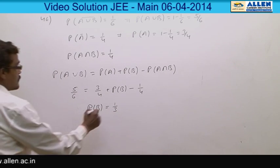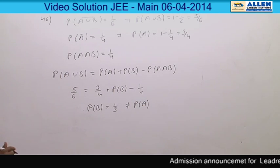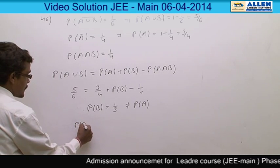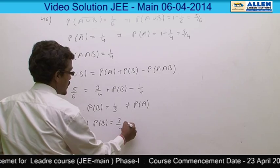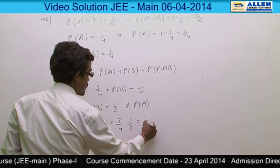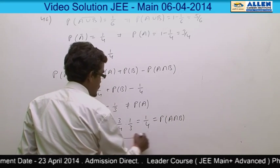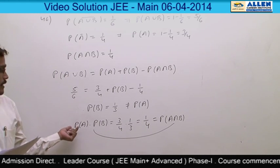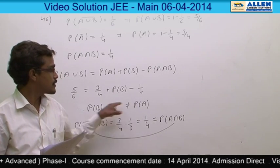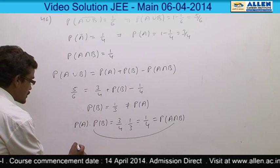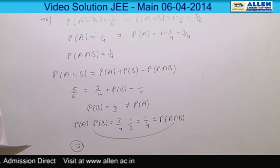Since P(A) = 3/4 ≠ P(B) = 1/3, events A and B are not equally likely. However, P(A)·P(B) = 3/4 × 1/3 = 1/4 = P(A∩B), so A and B are independent events. Therefore the answer is option 3: A and B are independent and not equally likely.